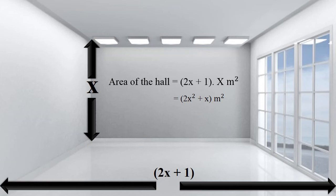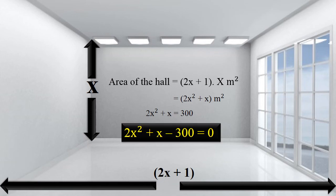So 2x square plus x is equal to 300 as given. Therefore, 2x square plus x minus 300 equals zero.